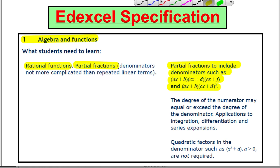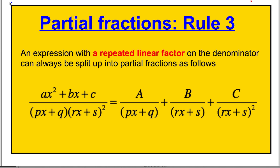Let's do this straight away by looking at the rule. The third rule with partial fractions: an expression with a repeated linear factor on the denominator can always be split up into partial fractions as follows — a number over the first distinct factor, another number over the second factor, and a number over the second factor squared.